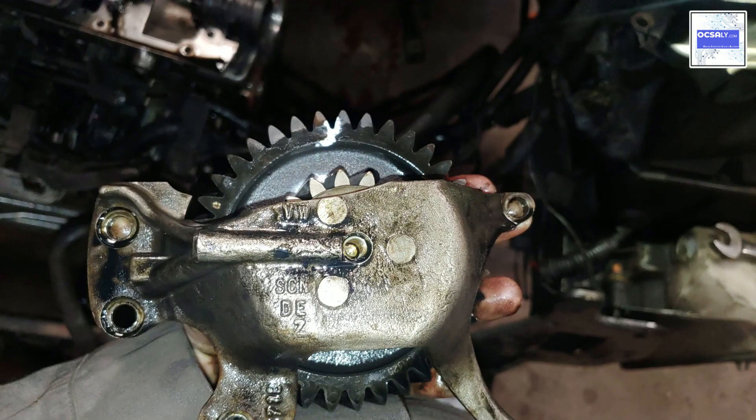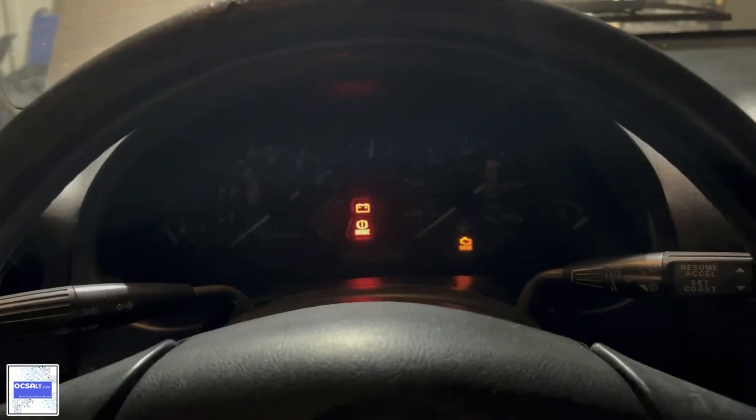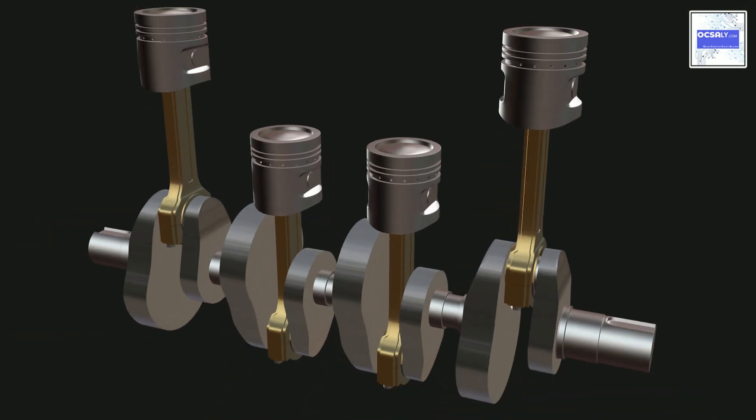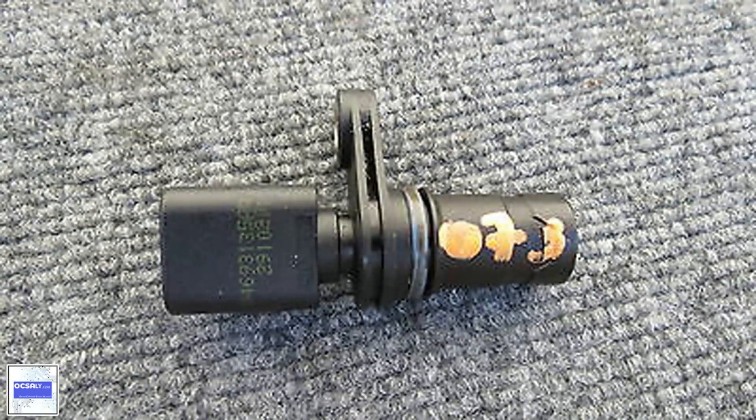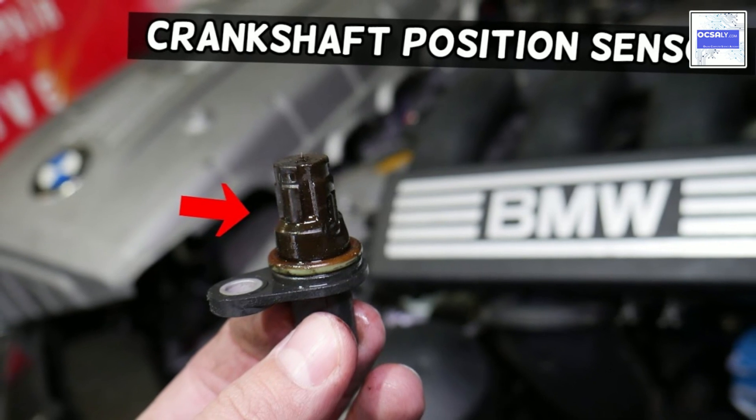The proper gap between the tip of the sensor and the reluctor ring is also very important. The correct testing can be found in the service manual and in this lecture's downloadable page, I attached some of the articles for testing your crankshaft position sensor.